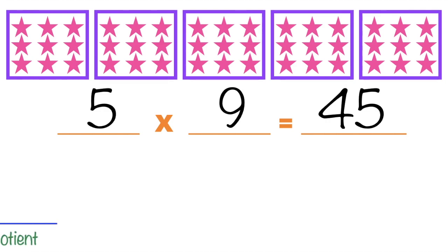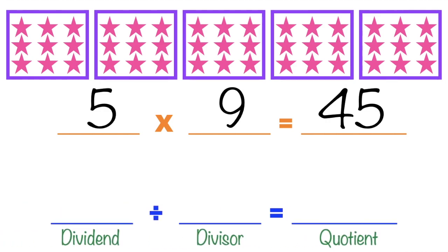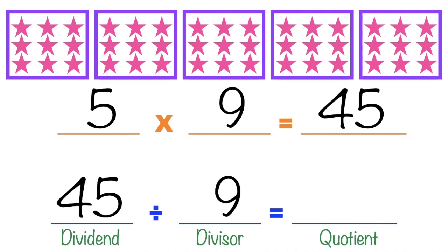Now for the division sentence: the dividend is 45, the divisor is 9 because you divide 45 in groups of nine per group, and the quotient is 5 because there are five sets of 9 in 45. So our division sentence is 45 divided by 9 equals 5. Looking at the multiplication sentence from right to left, we have 45, 9, and 5 — which is our division sentence.